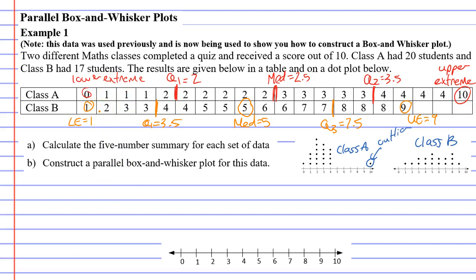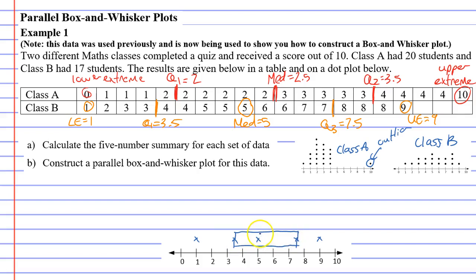There are some difficulties we're going to face here. We'll start with class B because class B doesn't have an outlier. We're going to put a little X at each number on the number line. Our upper extreme was 9 — put a little X there. Quartile 3 was 7.5, the median was 5, quartile 1 was 3.5, and the lower extreme was 1. You should have five X's. Then draw a box around the three middle X's, draw a line down the middle X, and draw whiskers out to your upper and lower extreme with a small line to show where it ends. That is the box and whisker plot for class B.